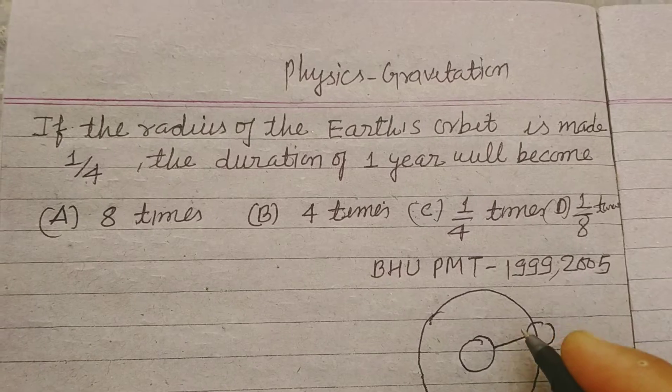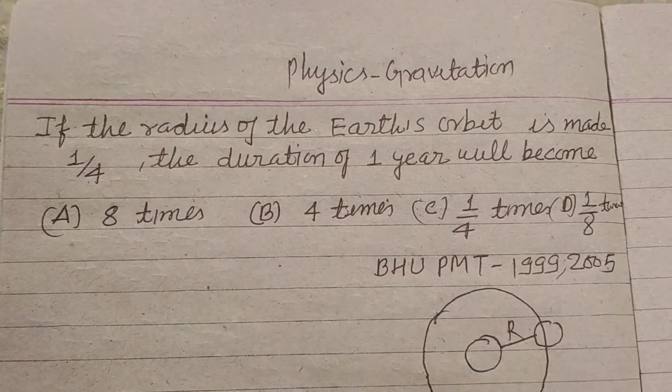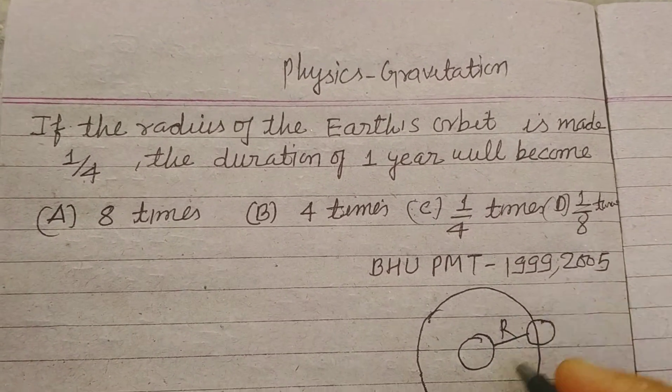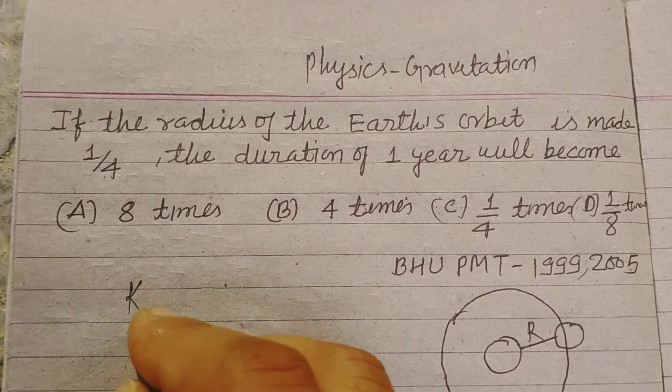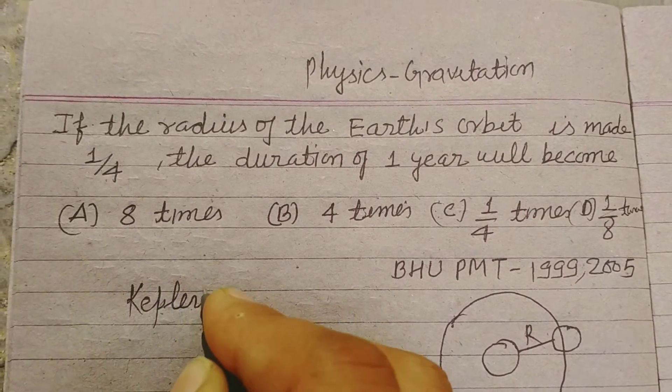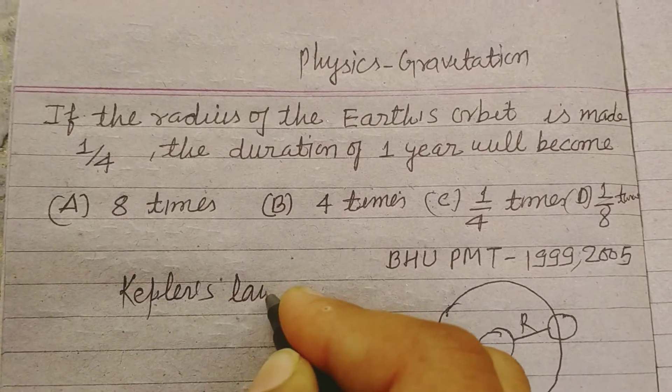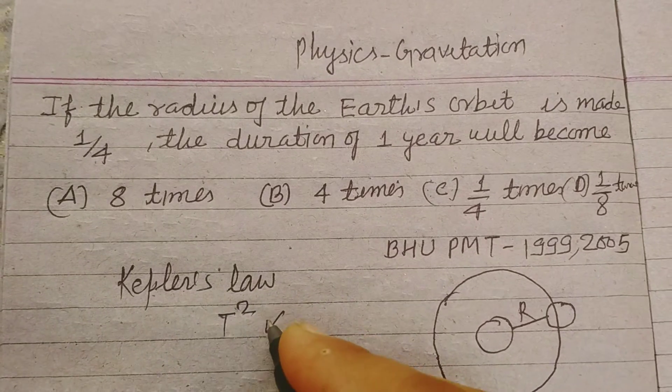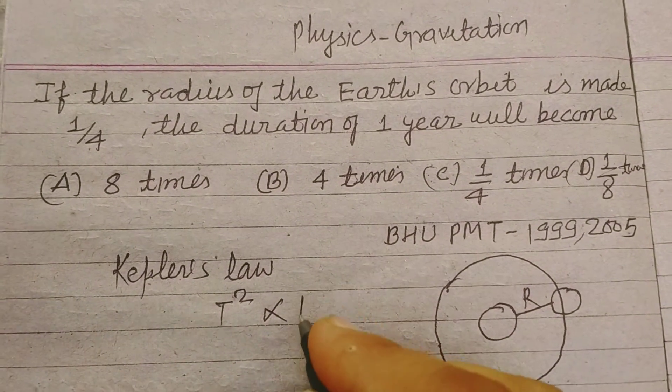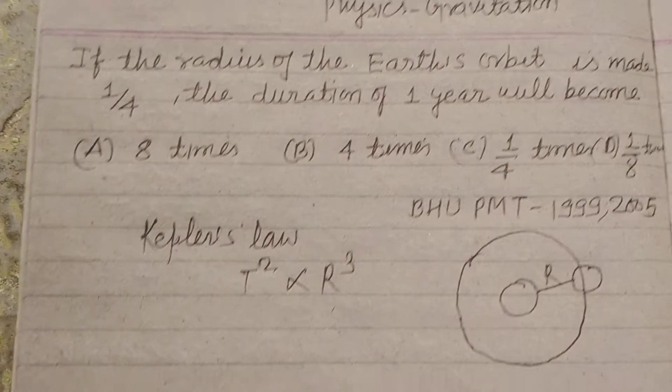So this radius R and time period of revolution according to Kepler's law. Kepler's law, second law, time period T square is directly proportional to R cube.